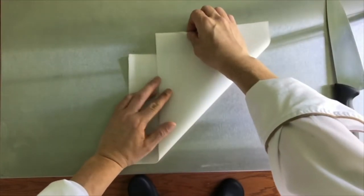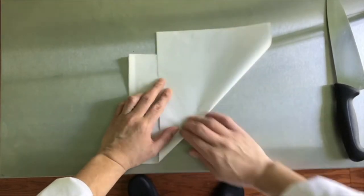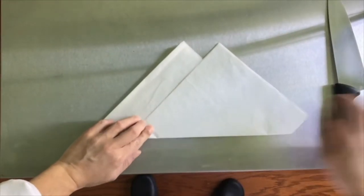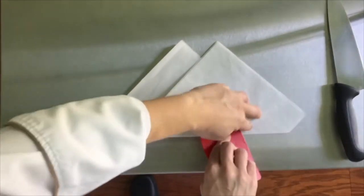Folding the paper diagonally, create a 90 degree right angle in the top corner as seen here. Create a sharp crease to ensure precise cut.